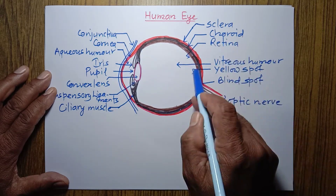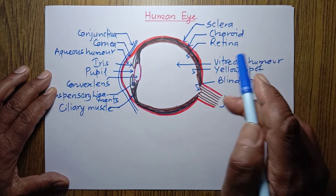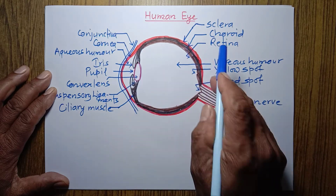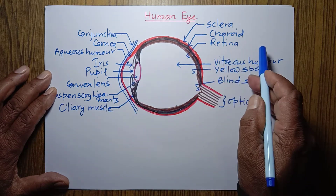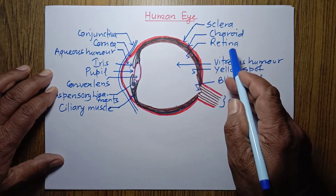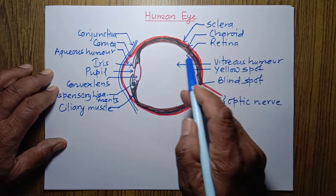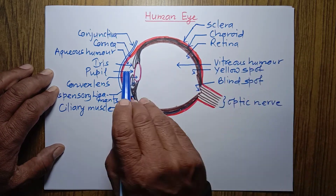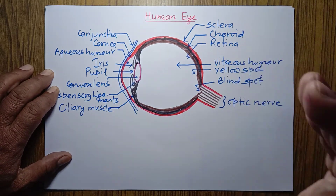Retina — the innermost layer of our eyeball is called retina, and it is responsible for the formation of the image. The eye forms an image on the retina and that can be seen. If the image doesn't fall on the retina — if it falls behind or in front of the retina — we will not be able to see the object.